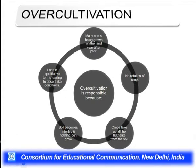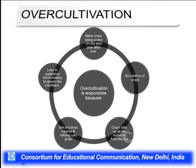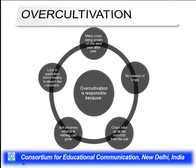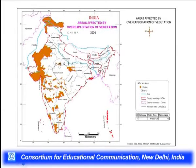Over-cultivation is responsible for significant land degradation. Many crops are grown on the same land year after year with very intensive land use, no crop rotation, and crops take up all nutrients from the soil, causing it to become infertile. Over-irrigation also contributes to land degradation. One third of the irrigated area of the world may be considered a degraded area. In northern Haryana, Gujarat, and semi-arid zones between these regions, over-exploitation of vegetation is a major concern.